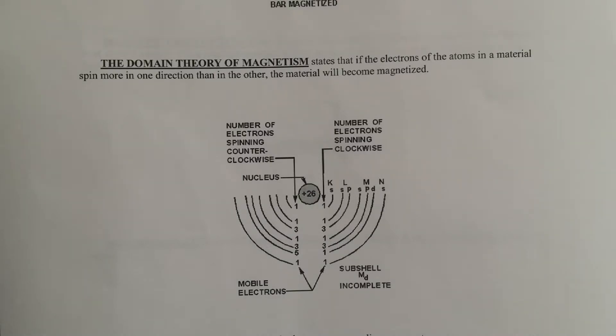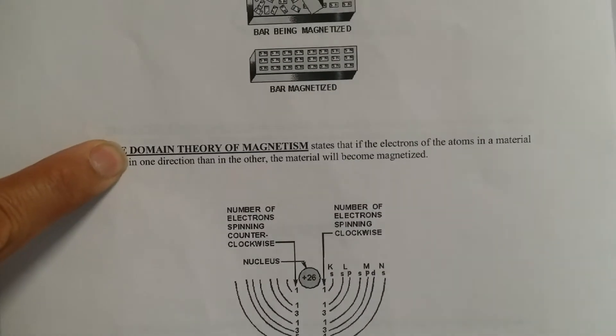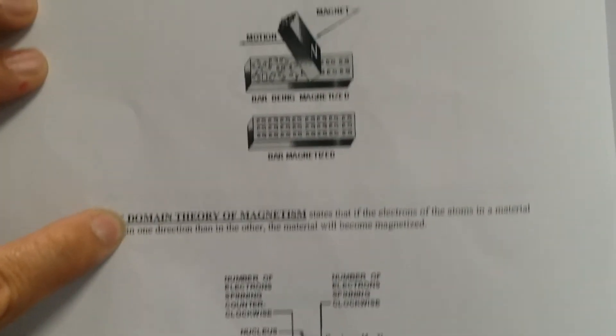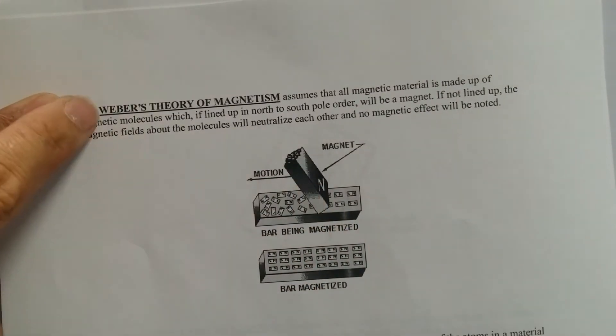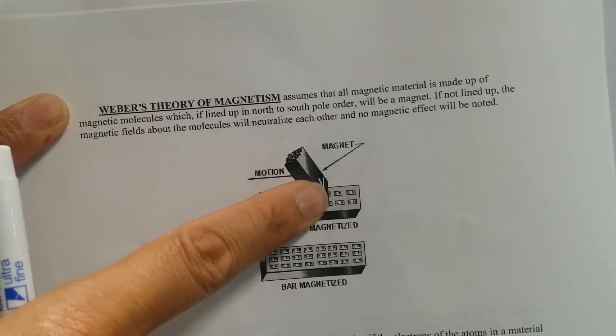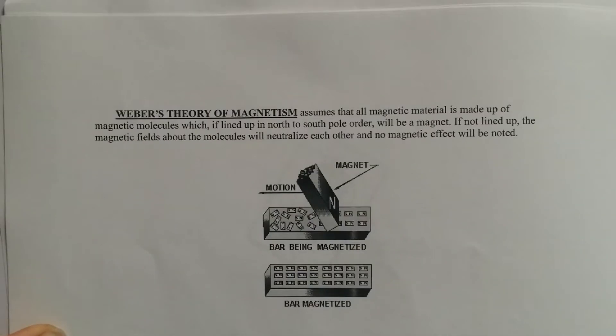So if you get electrons to travel in the same direction within that piece of metal, then you will get a high magnetic property or a very strong magnet from that piece of metal. So those are the two theories. One is called the domain theory, which is the one of electrons spinning in the same direction, and the other one, which talks about the molecules being aligned, is the Weber's theory of magnetism.